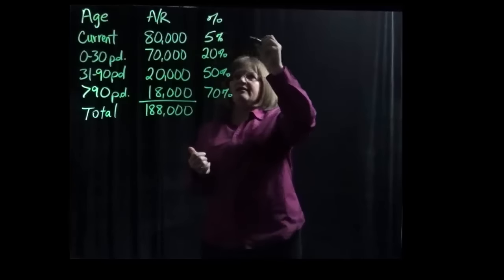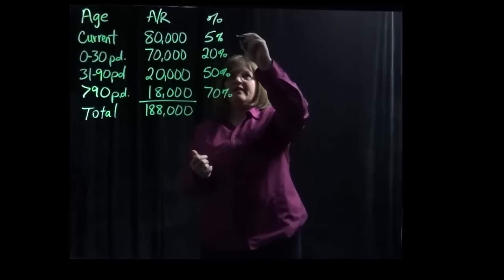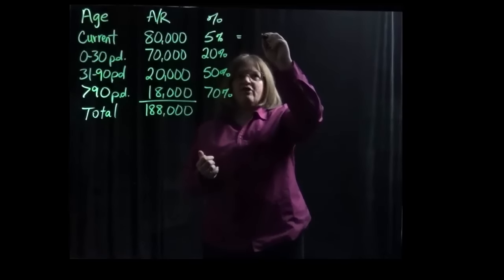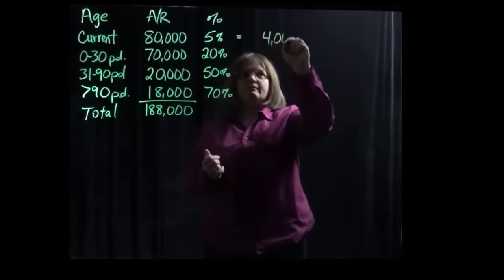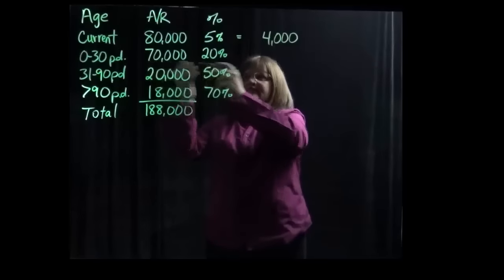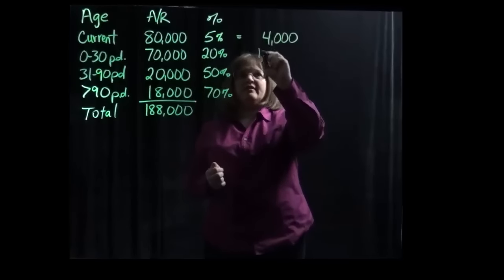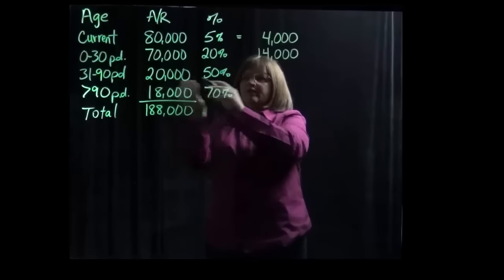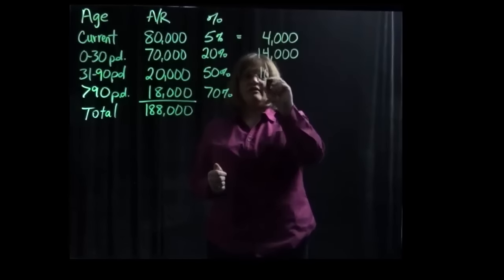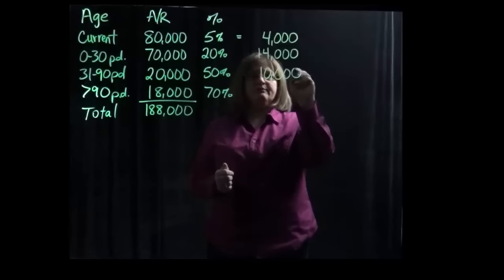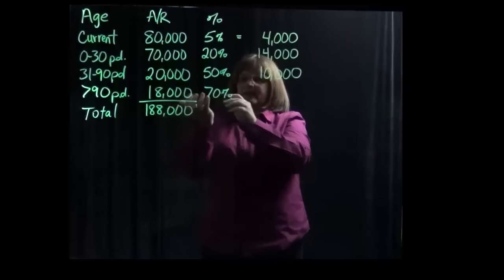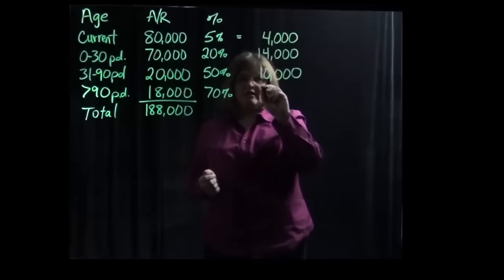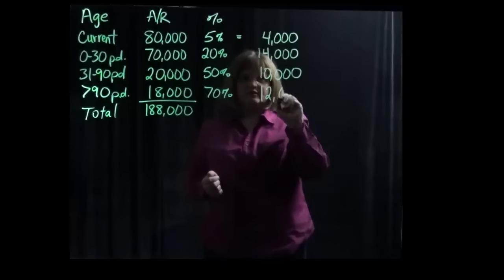And so if we multiply $80,000 times 5%, that's going to give us $4,000. If we multiply $70,000 times 20%, that's going to give us $14,000. If we multiply $20,000 times 50%, that gives us $10,000. And if we multiply $18,000 times 70%, that's going to give us $12,600.